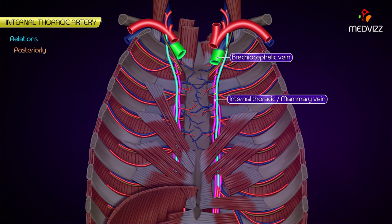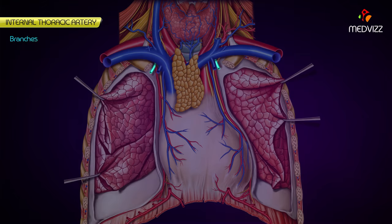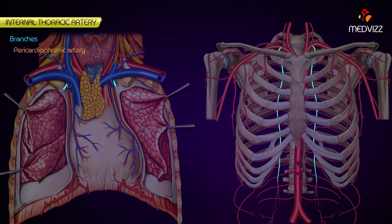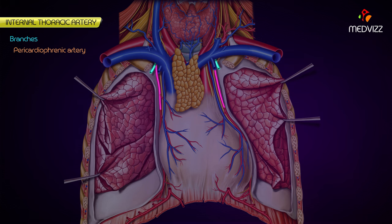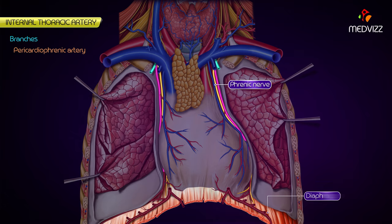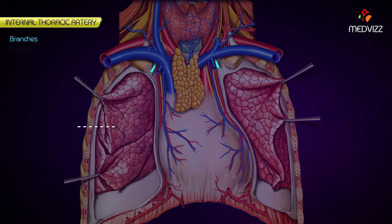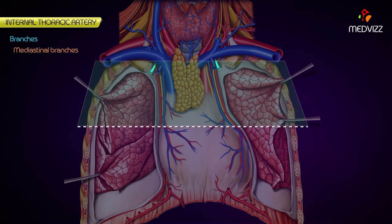The pericardiophrenic artery arises in the root of the neck above the first costal cartilage and descends along with the phrenic nerve till the diaphragm. It supplies the pericardium and pleura.